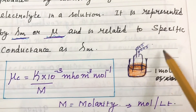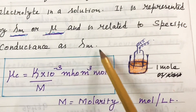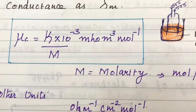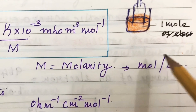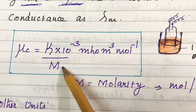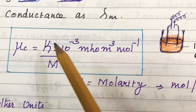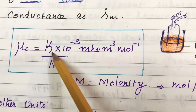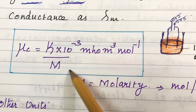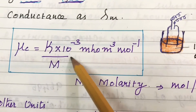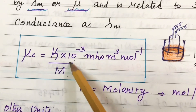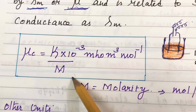Molar conductivity is related to specific conductance as lambda m. One mole of a substance in a liter is called molarity, represented as M. The conductance of that solution is kappa. Taking these into account, the formula of molar conductivity is: kappa into 10 to the power minus 3, divided by molarity.